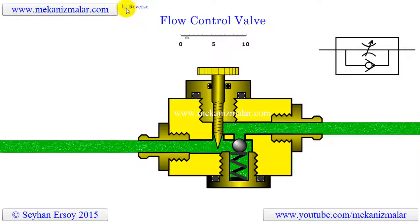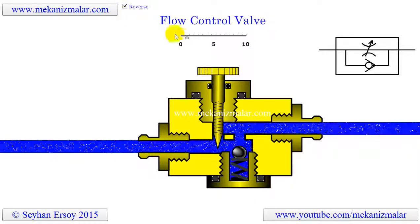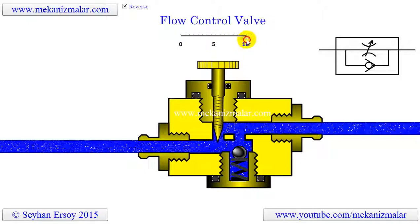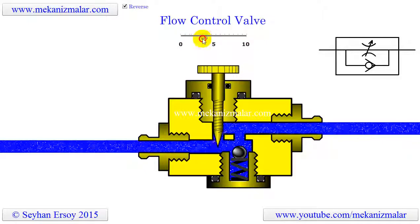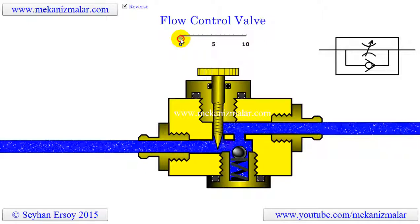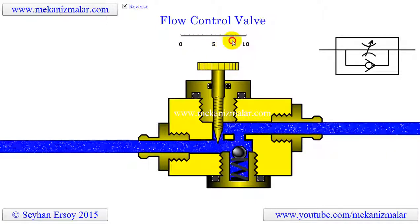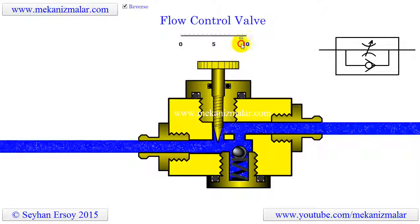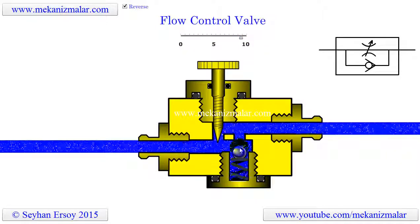On the other hand, the reverse flow goes over the check valve and needle valve combination. This prevents the fine-tuning of the return flow, since we do not have any control over the flow passing through the check valve openings.